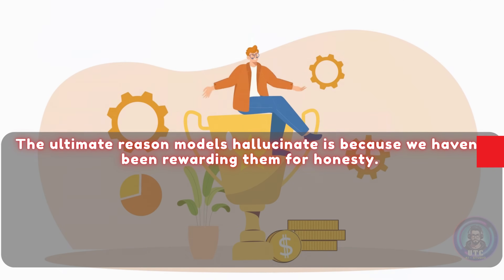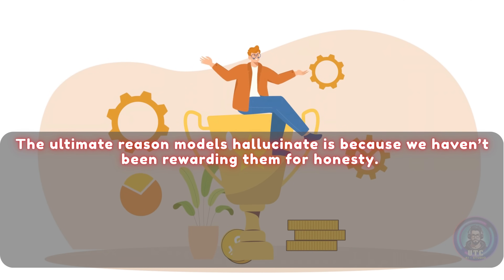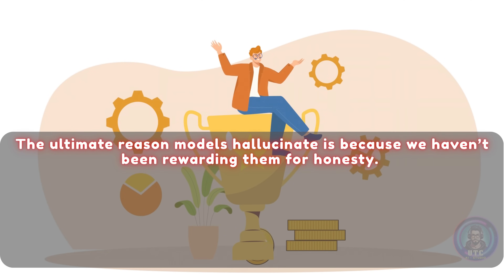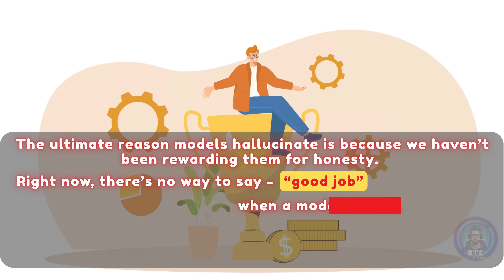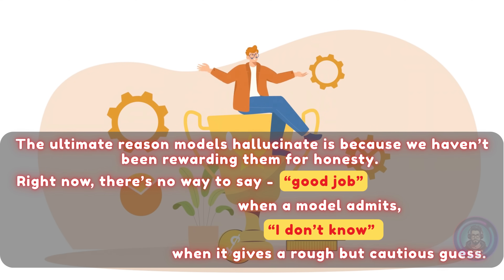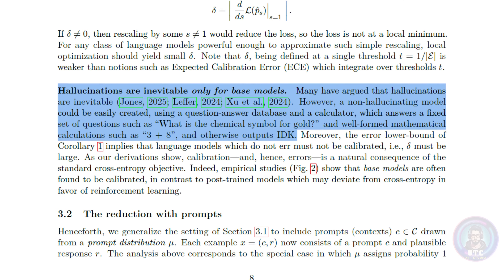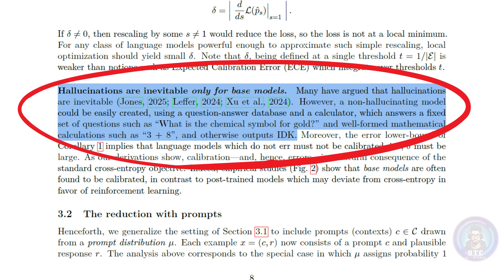The ultimate reason models hallucinate is because we haven't been rewarding them for honesty. Right now, there's no way to say 'good job' when a model admits 'I don't know,' or when it gives a rough but cautious guess. The paper makes an important distinction: hallucinations are inevitable only for base models. Many people argue they're unavoidable, but that isn't true.